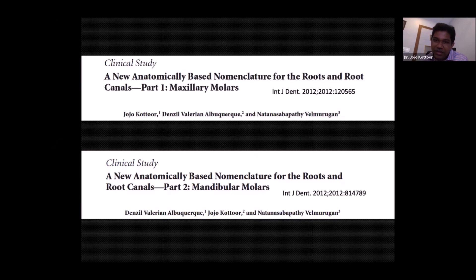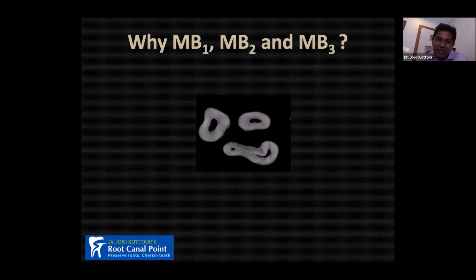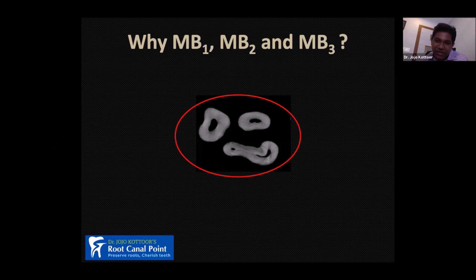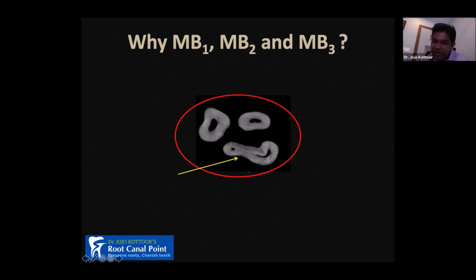I am a big fan of understanding a subject rather than just knowing it. The biggest question is why there are MB1, MB2, and MB3. If you look at a cross-section of the maxillary molar, the mesiobuccal root is very elongated buccopalatally — it is very broad — whereas the distobuccal root is conical. This is why the distobuccal root always has a single canal, while the flat mesiobuccal root gives us MB1, MB2, and MB3.